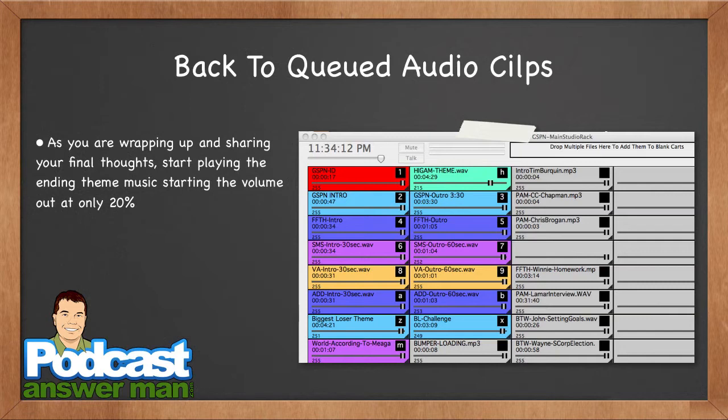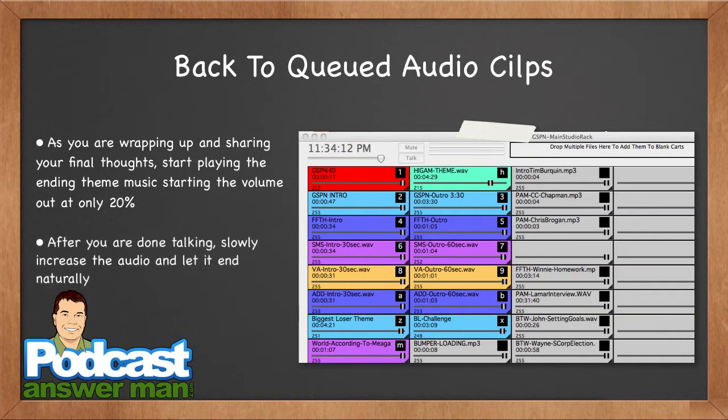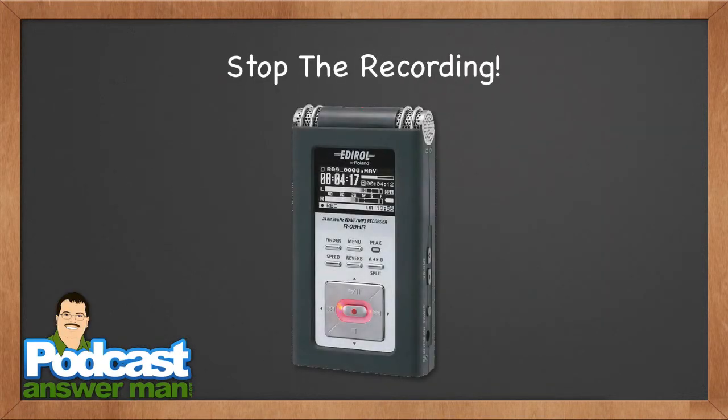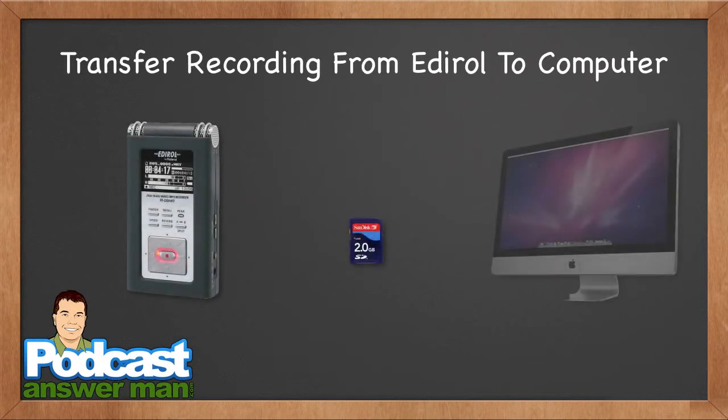For the outro I usually have longer music. I start it at about 20% volume — really low — and begin talking over it. I gradually increase the audio a little as I'm talking, depending on the music. Once I'm done at the end, I turn the music all the way up to 100%, knowing the audio levels are already checked, and let the music play out. When the music's done I stop the recording.